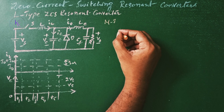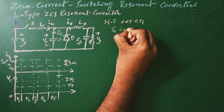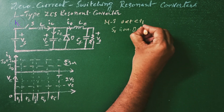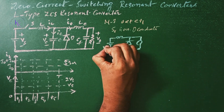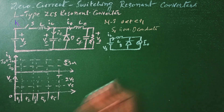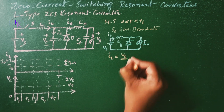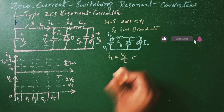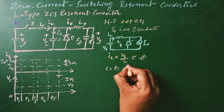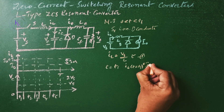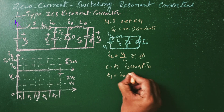Mode 1 is valid for 0 < T < T1, when switch S1 is on and diode D conducts. The inductor current IL rises linearly, given by IL = Vs/L · T (equation 1). This mode ends at T equals T1, where IL(T1) = I0, thus T1 = I0·L / Vs.